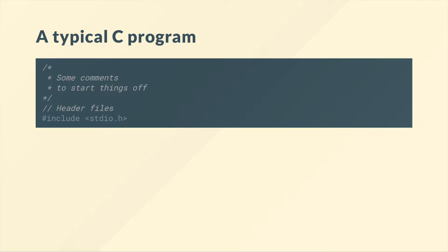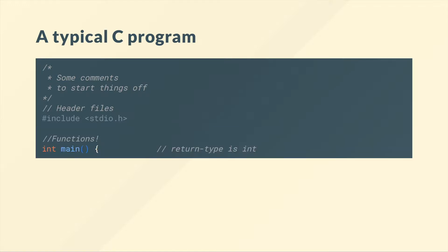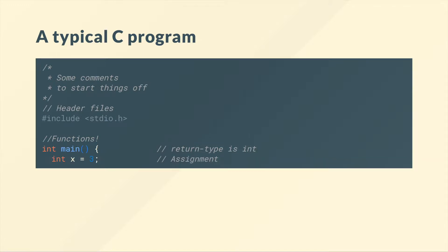Then we include some header files — this is common practice. For now you can just think about header files as some code that we insert into our program. Then functions — functions are the main source of everything. We start with main here, and you can see we've got the return type first, then the function name, and then parameters because this is the definition of the function. And anything inside that function will be encapsulated with braces.